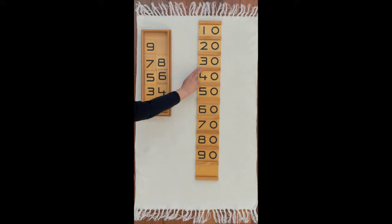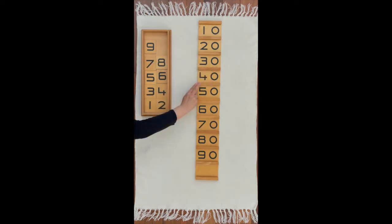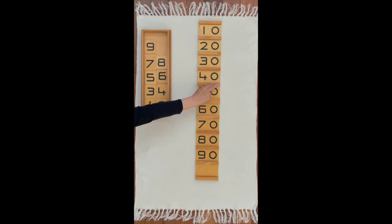Three tens has another name, thirty. This is how you write thirty. Four tens has another name, forty. This is how you write forty.